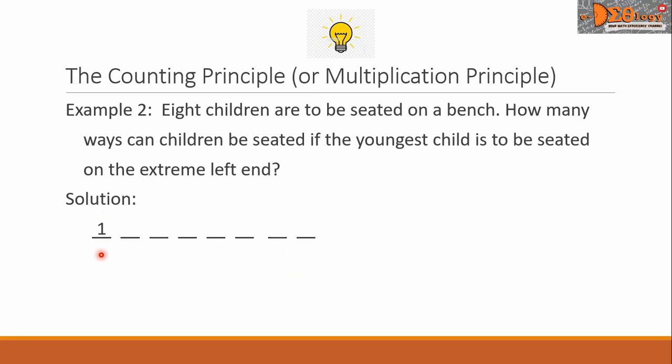The next blank here is the seat next to the youngest. Any of the remaining seven children can sit here. So there are seven options for this seat. We write here number seven. On the next blank here, we can see that there are two children already seated. The youngest and any one of the seven children. For the next blank, any of the remaining six children can sit here.